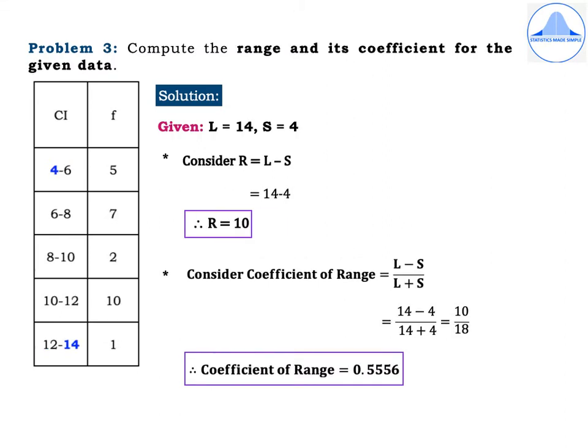Problem 3. Compute the range and its coefficient for the given data. The class intervals are 4–6, 6–8, 8–10, 10–12, 12–14 with corresponding frequencies 5, 7, 2, 10 and 1. We make use of the lower limit of the first class interval and the upper limit of the last class interval. So L = 14 and S = 4. R = L − S = 14 − 4, therefore R = 10.